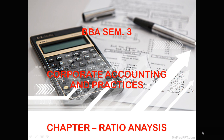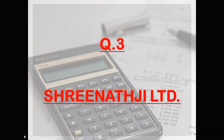Good morning students, this is the lecture of corporate accounting and practices. We are in the chapter of ratio analysis, and now it's time for our third question. The question is Srinath Ji Limited. In this question, we have to find out the ratios and compare those ratios with the industry average, and then provide brief comments on each.